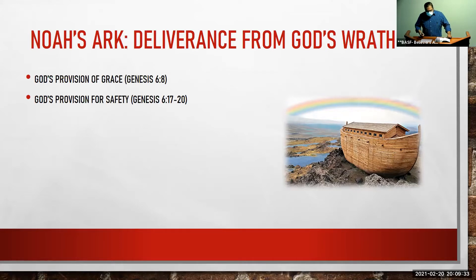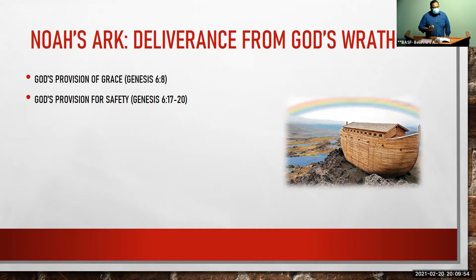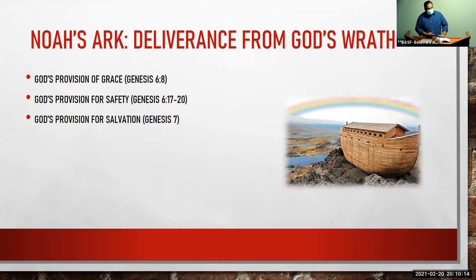Jesus says in John chapter 10 that the thief comes to kill, to destroy, and to steal, but Jesus has come so that we may have life and life abundantly. He is the source of life — 'In him was life and life was the light of men,' John tells us. When we come to the ark — the Lord Jesus Christ — we are given life, we are given safety. So we see this ark was God's provision of safety for Noah; everything inside the ark was kept safe, was kept alive.